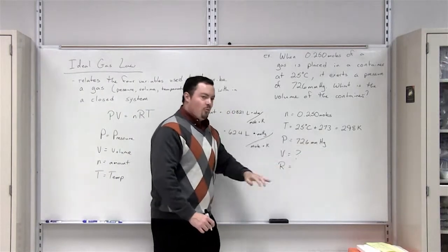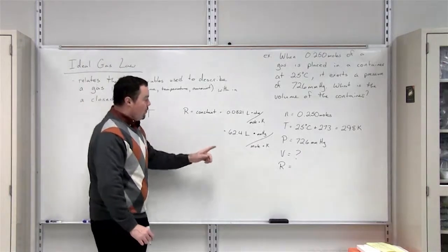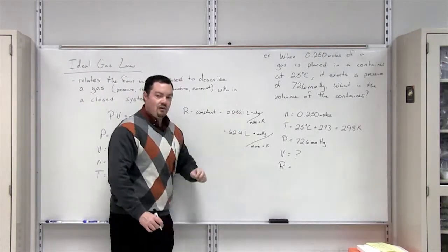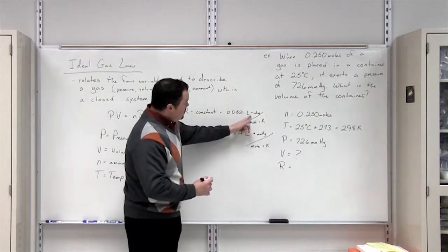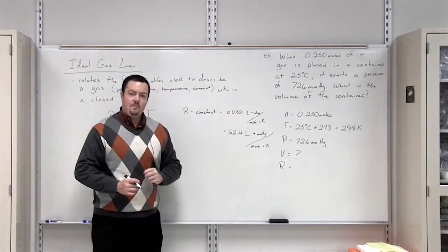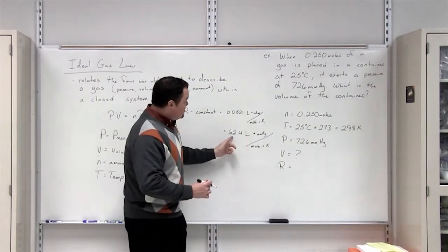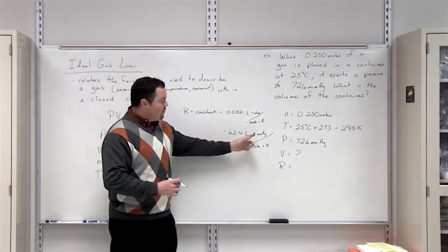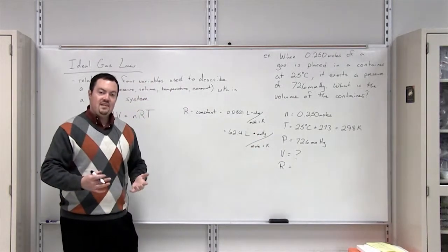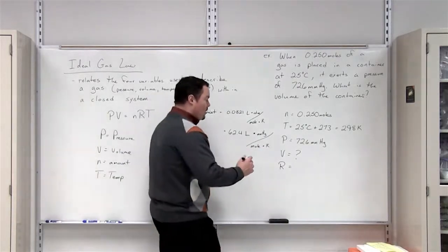In this problem, our pressure is measured in millimeters of mercury. So therefore, we're going to choose the R value that includes that unit. This R value uses atmospheres as its measure of pressure. Where the 62.4 liters multiplied by millimeters of mercury is the R value that we want to use because it contains the correct unit.